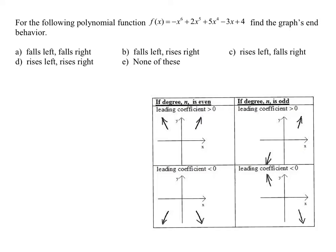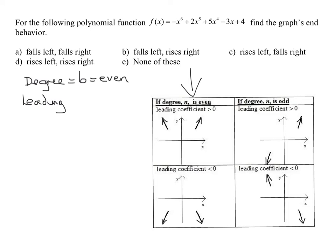So let's take a look at our polynomial here. What is the largest exponent on any of the x's? It's x to the sixth. Therefore, the degree of my polynomial is 6, which is an even number. And what is the leading coefficient — that is, what is the number in front of the degree 6 term? In front of that is a negative 1, so the leading coefficient equals negative 1, which is less than 0.